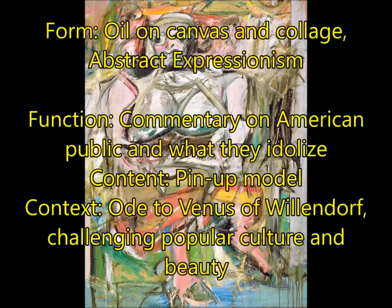Next, we're going to have Woman One by Willem de Kooning. For form, this is an oil on canvas, but it also has collage elements added onto the canvas. This is abstract expressionism, and it is the best example of what pure abstract expressionism was all about. For function, this was a commentary on the American public — turning that mirror on viewers and making them question what they idolize. For content, it's a pinup model, and that's how de Kooning gets that function across. For context, this is an ode to Venus of Willendorf — she has enlarged mammary glands and an enlarged stomach because emphasis is placed on reproduction, but here he's used that to say, look what you're idolizing, look what you're emphasizing for American women to be. It's challenging popular culture and the American view of beauty.